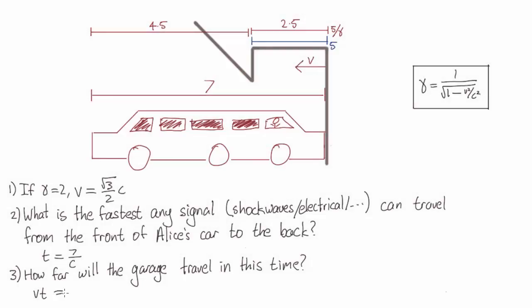So the garage has velocity v, which is root 3 over 2 c, and we know that the shortest possible time before the car can come to a halt is 7 over c. So in that time, the garage will travel a distance 7 over 2 root 3 meters, which is approximately equal to 6, which is definitely more than the 4 and a half meters of Alice's car that are sticking out the back.